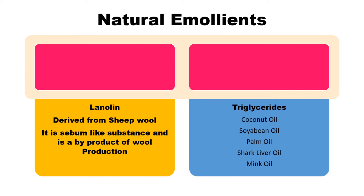From animal sources we also get a large number of emollients such as shark liver oil and mink oil, which again have greasy properties and are used in a wide range of cosmeceuticals. Another special emollient from animal sources is lanolin, derived from sheep's wool. It has a sebum-like structure and is a byproduct of the wool production industry. So natural emollients basically comprise lanolin and triglycerides from both plant and animal sources.